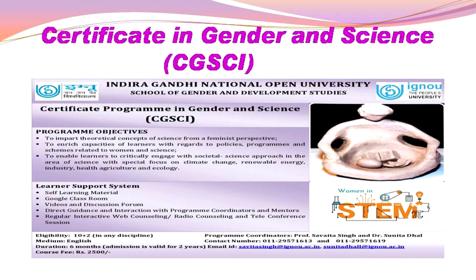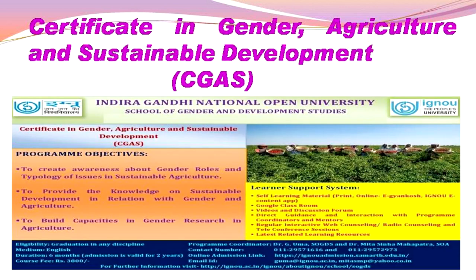The last program the school offers is the Certificate in Gender, Agriculture and Sustainable Development. It is a certificate, but mind it — the eligibility for this program is graduation. It is important that to understand agriculture and sustainable development, you have to be a graduate in any discipline.